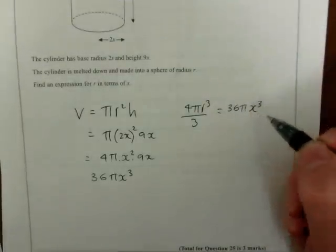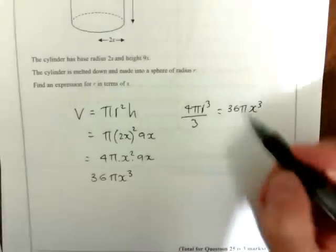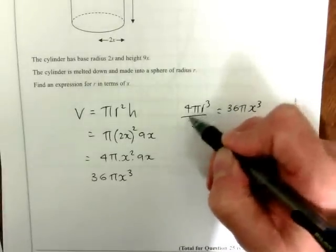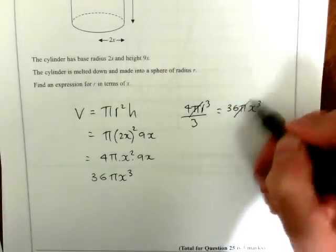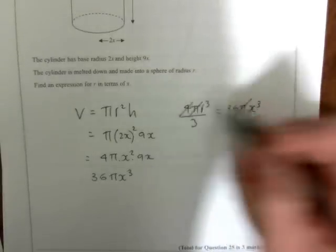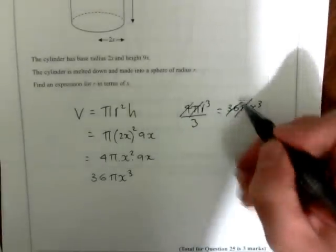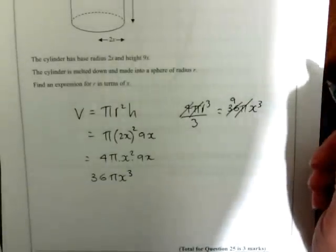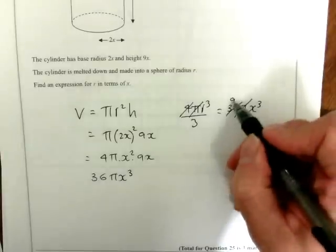To make r the subject, some things cancel. The π cancels on both sides, and dividing both sides by 4 reduces 36 to 9.